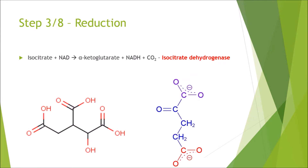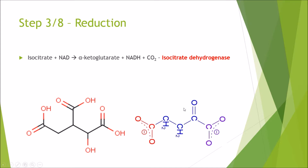Step 3 of 8 is reduction. Isocitrate and NAD come together to form alpha-ketoglutarate, a reduced electron carrier, and carbon dioxide. That is catalyzed by the enzyme isocitrate dehydrogenase. Looking at these two molecules, if we rotate this one, you can see what has happened — this carbon has been cleaved off giving us carbon dioxide, and the electron carrier then comes through and picks up the remaining hydrogens.